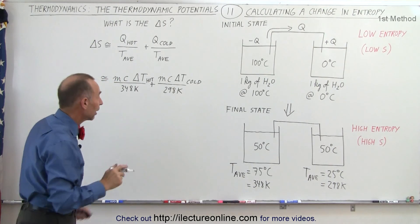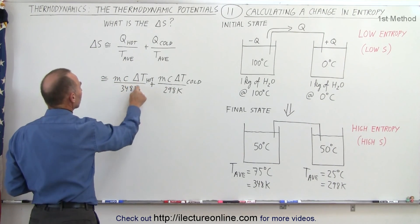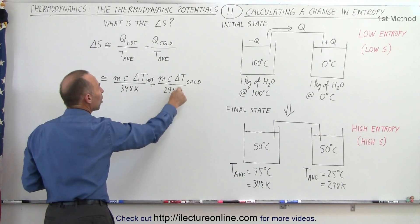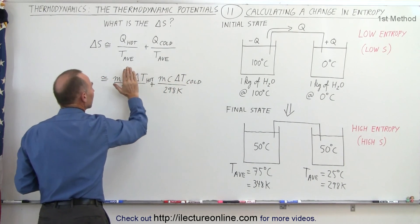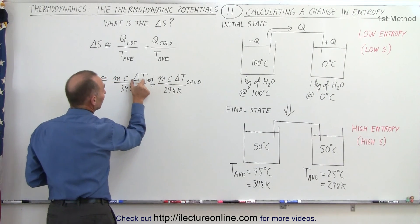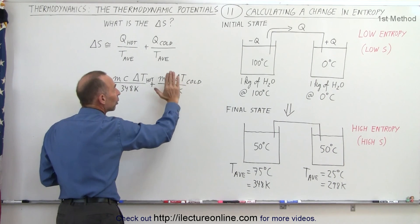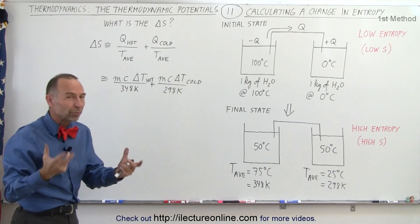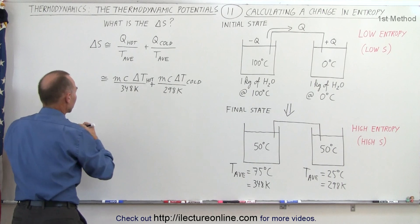At the hot reservoir we're dividing by a larger denominator. At the cold reservoir we're dividing by a smaller number, which means the magnitude of the cold term will always be bigger than the magnitude of the hot term. Since the temperature change at the hot reservoir is negative and at the cold reservoir is positive, the larger absolute value is always positive, so when you sum the two up you always end up with a positive entropy change. Let me illustrate that.